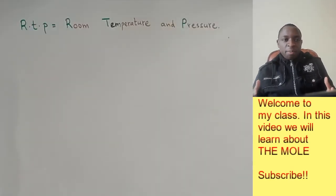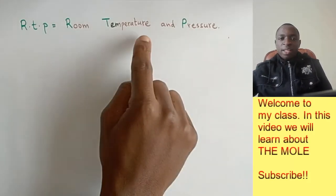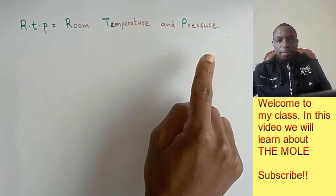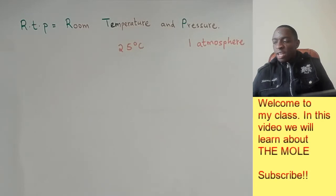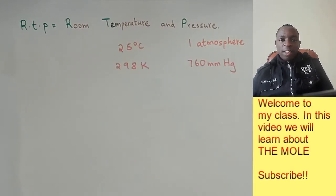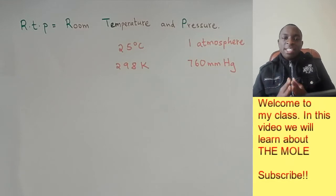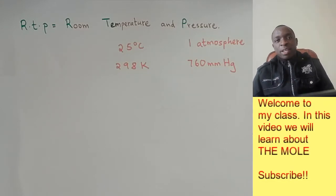RTP is an abbreviation for room temperature and pressure. Now the conventional room temperature and pressure that we give is usually 25 degrees Celsius and 1 atmosphere. It can also be given in terms of the Kelvin scale, which is 298 Kelvin and 760 millimeters mercury.